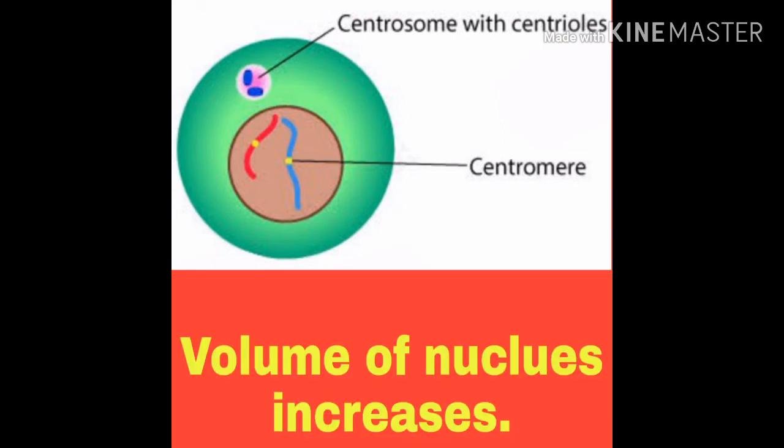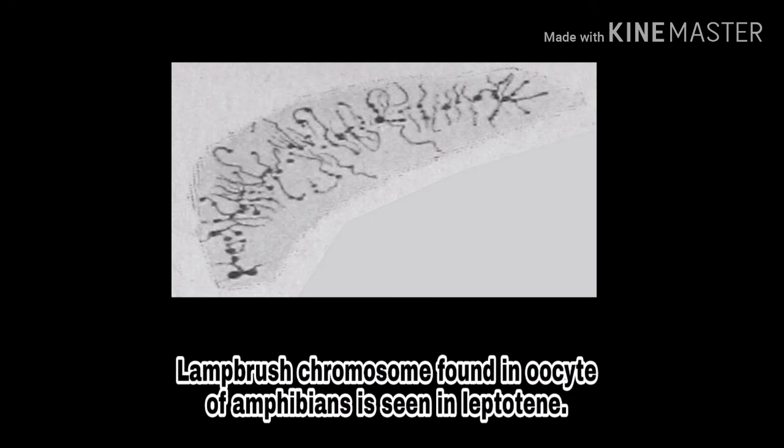Third point: the volume of the nucleus is also increasing — मतलब leptotene stage में nucleus की size भी बढ़ जाती है। Fourth point: lampbrush chromosomes found in oocytes of amphibians are seen in leptotene. Lampbrush को immature chromosome कहते हैं और oocyte को ovum कहते हैं — मतलब leptotene stage में immature chromosome हमें amphibians के ovum में दिखाई देता है।